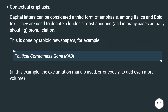The second is contextual emphasis. Capital letters can be considered a third form of emphasis alongside italics and bold text. They are used to denote a louder, almost shouting — and in many cases actually shouting — pronunciation. This is done by tabloid newspapers, for example: 'POLITICAL CORRECTNESS GONE MAD!' where the exclamation mark is used, erroneously, to add even more volume.